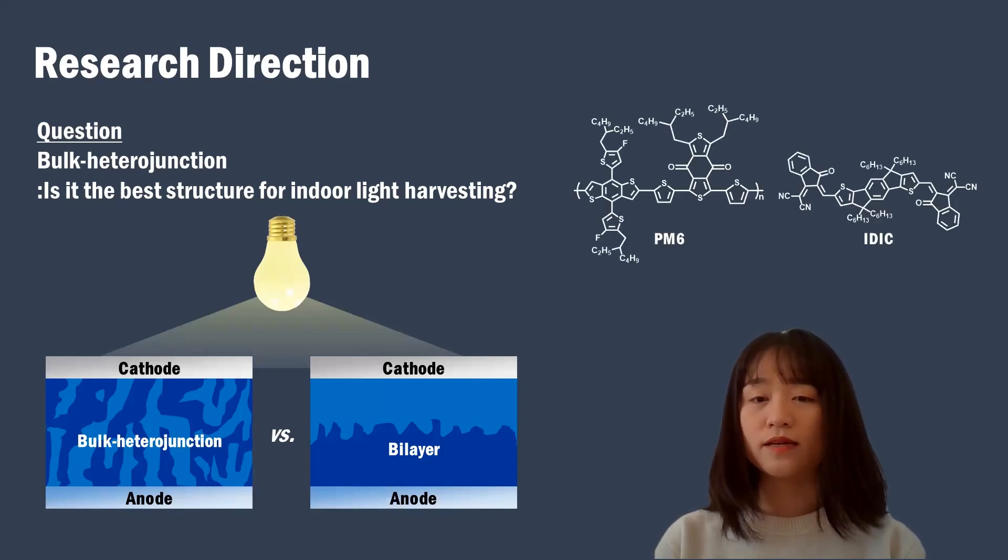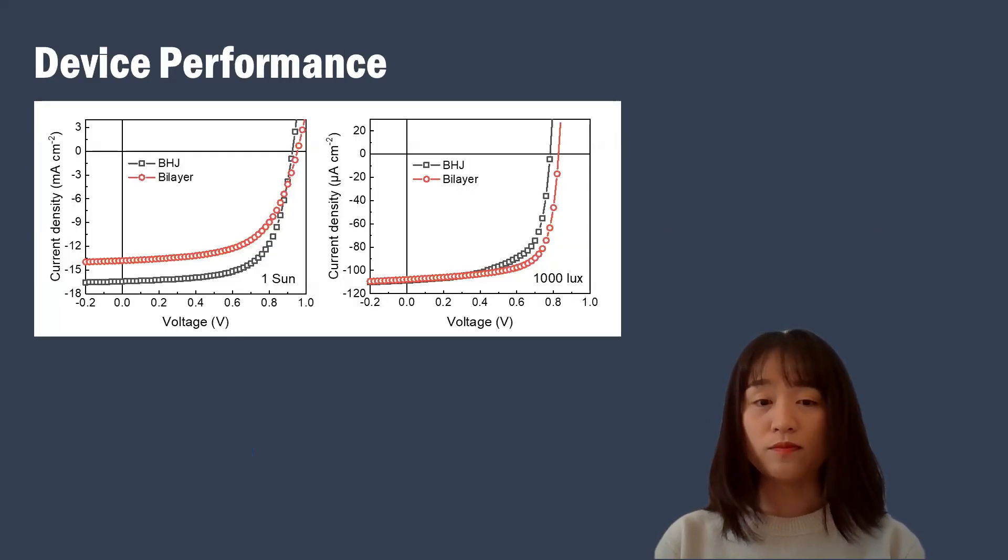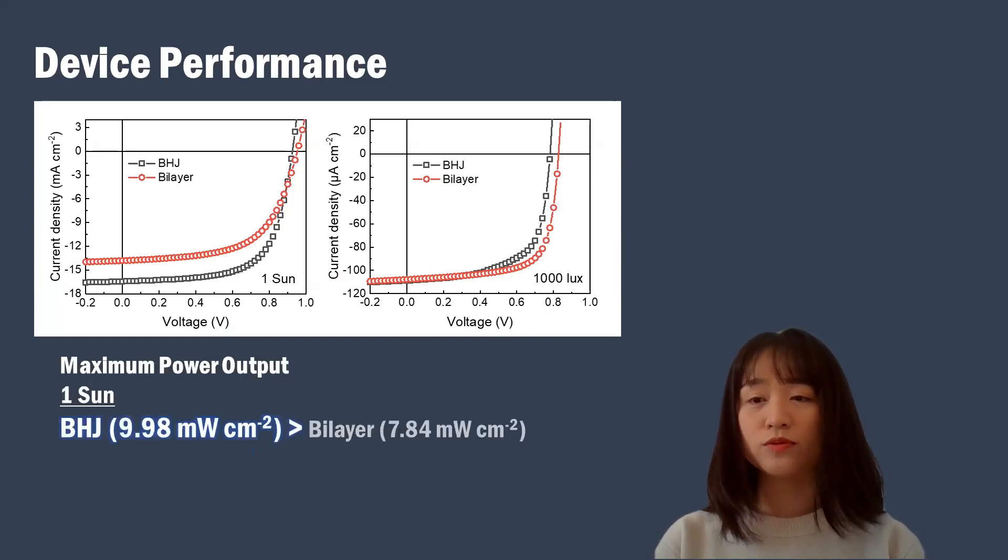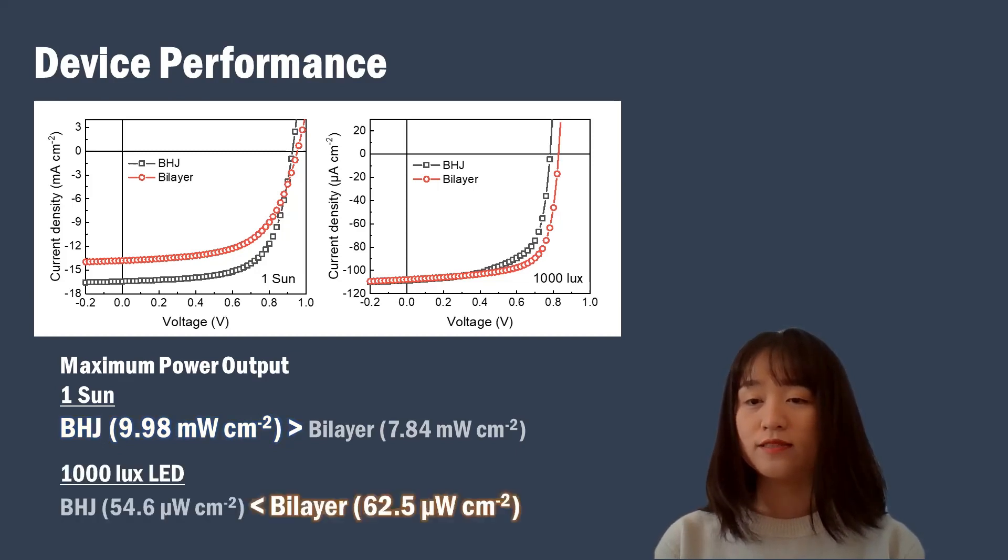We used PM6 and IDIC as photoactive materials in this work. Let's see the device performance first. Under one sun illumination, bulk-heterojunction devices show higher maximum power output, mainly due to higher short circuit current density compared to bilayer devices. However, under indoor light illumination, the situation is changed. In this case, bilayer devices show much better device performance, which could be attributed to mainly higher open circuit voltage as well as fill factor compared to bulk-heterojunction devices.